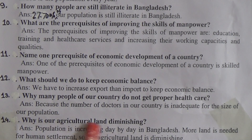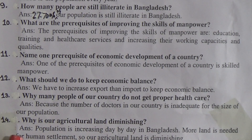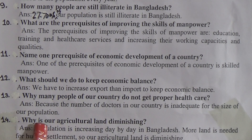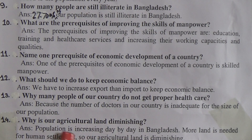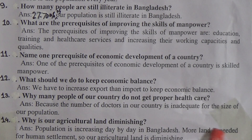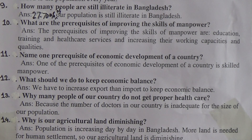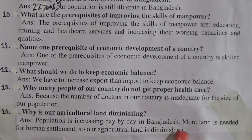Question Number Fourteen: Why is our agricultural land diminishing? Answer: Population is increasing day by day in Bangladesh. More land is needed for human settlement, so our agricultural land is diminishing.